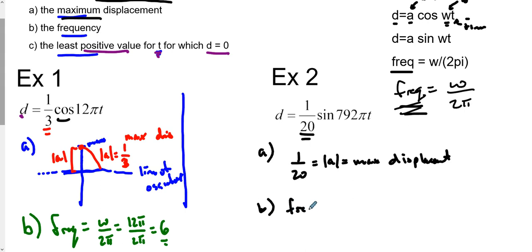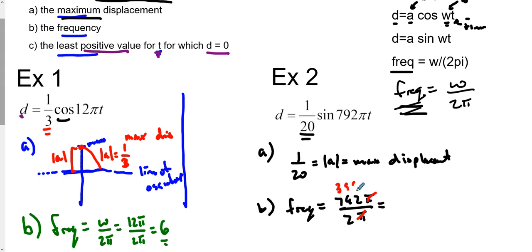For part B, we find the frequency. Frequency is again W over 2π. In this case W is 792π, so we have 792π over 2π. The π's cancel out, and 792 divided by 2 gives us a frequency of 396.